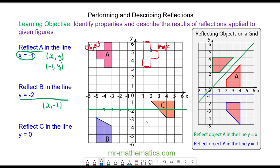Each vertex will again be the same distance away from the mirror line but on the other side. So this vertex at negative 5 and negative 3 is reflected to negative 5 and negative 1. And this vertex is reflected two units away, so it is at negative 3 and 0. And I can reflect this edge by joining the two reflected coordinates together.